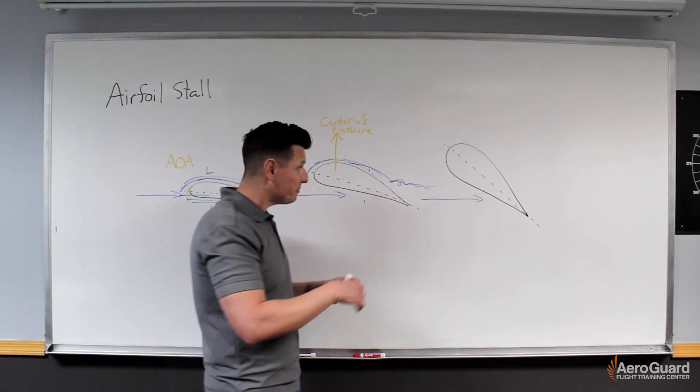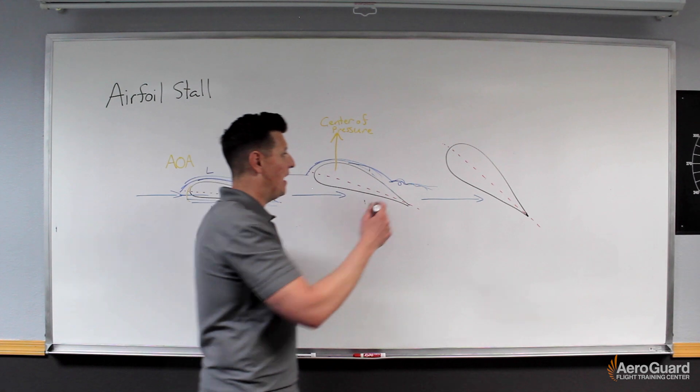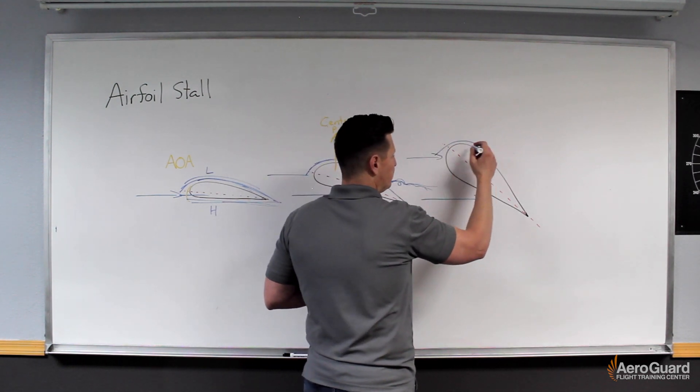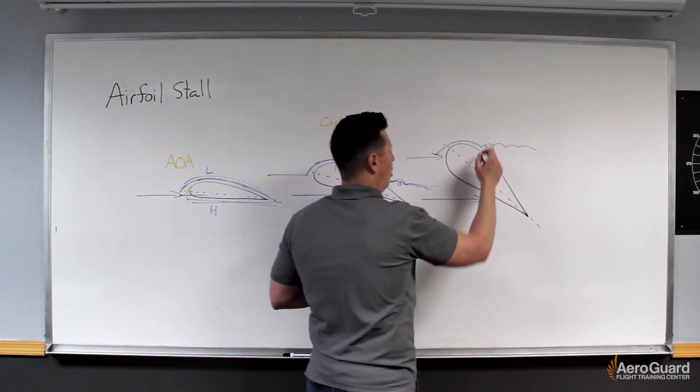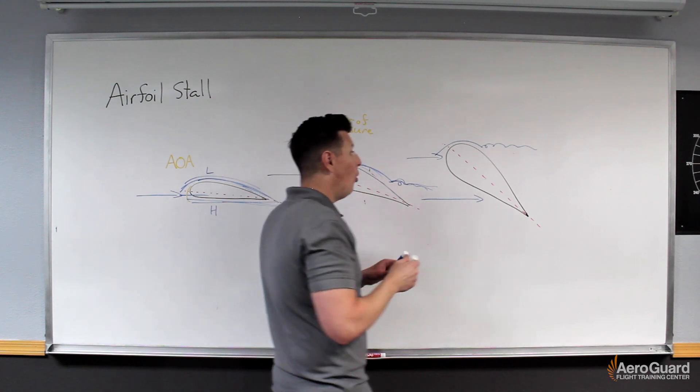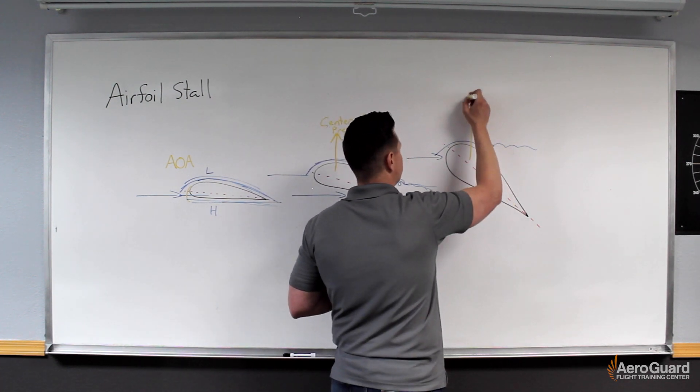But I'm also creating more separation of this boundary layer from the upper surface of the wing, which means that at some point that separation could get to a place where this separation is occurring all the way near the leading edge of the wing.